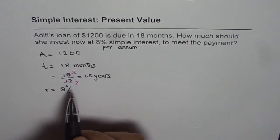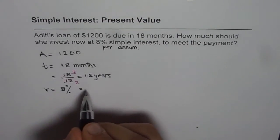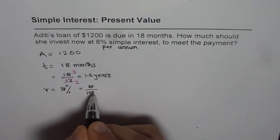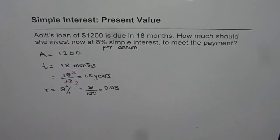So we have to always take the decimal value. So 8% decimal value will be 8 over 100. That is 0.08 per annum. So we know all this.